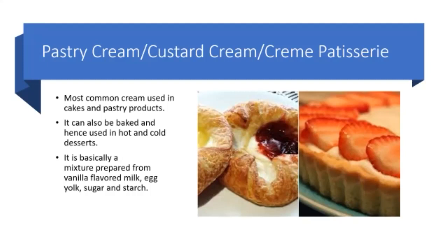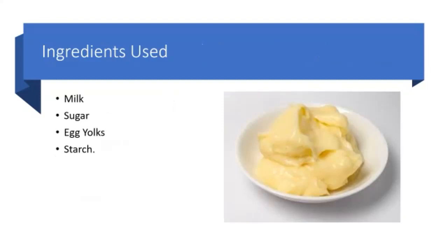Pastry cream is basically a mixture prepared from vanilla flavored milk, egg yolks, sugar and starch. Whole milk which is fresh is commonly used for making it. Granular sugar can be safely used as it gets dissolved while cooking in milk. Custard powder is the commonly used starch; however, sometimes cornstarch along with custard powder in the ratio of 1 to 1 can also be used.